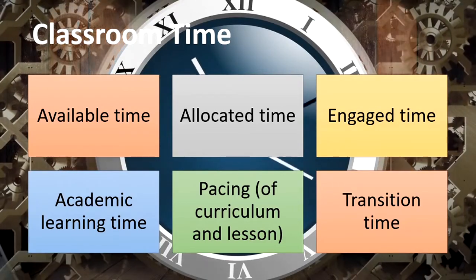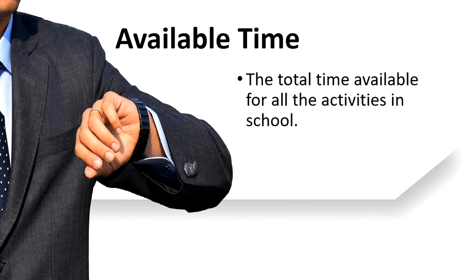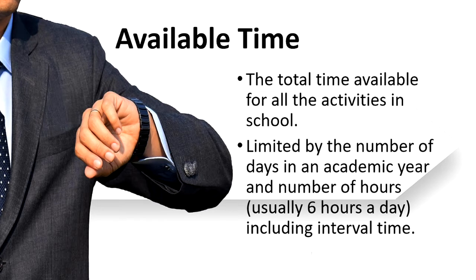The first is available time. Available time means the total time available to you for all activities in the school — from the morning assembly till evening, including classroom work, homework checking, office work, register maintenance, and all other tasks. The total time available to the teacher should be very clear. This time may be expressed in months or hours; if you think about the whole year, it is the number of days in an academic year and the number of hours in a particular day, including interval time, which may range from six to eight hours.